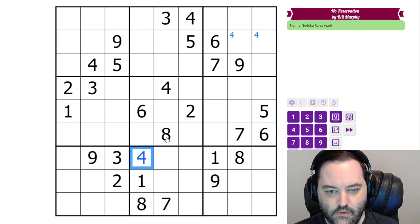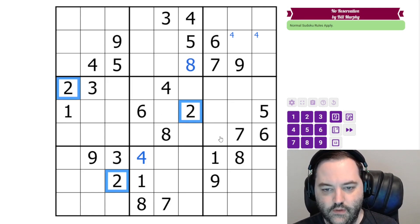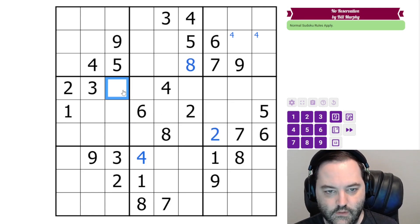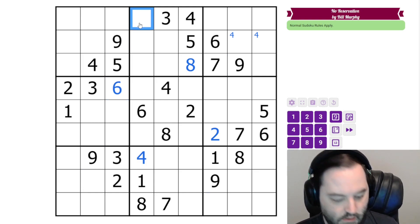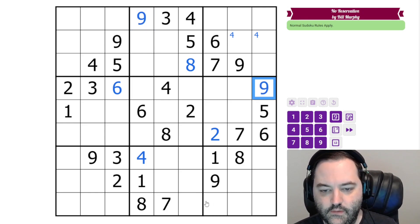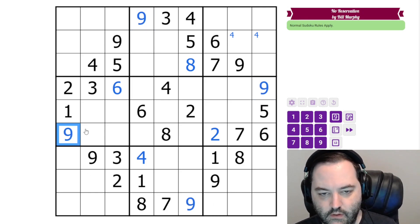We can do the same thing with eight, looking up here. We can do the same with two, looking up here, and it's six. So I also completely ignored the nines for a while. Nine can only go in this cell, this cell, this cell, and this cell in those boxes.